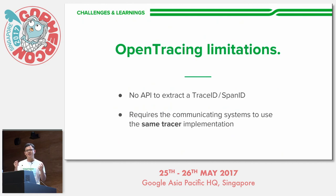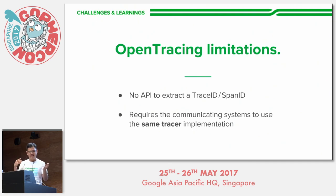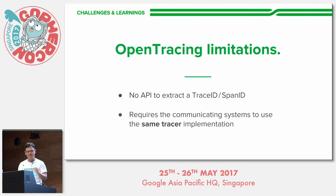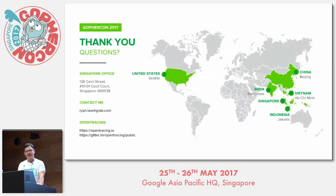The easiest way to deal with the wire format problem is to use the same tracer implementation on both services. The harder way is to write a tracer implementation that understands one or more wire formats. And that's the end of my presentation — does anybody have any questions?